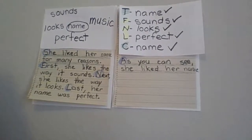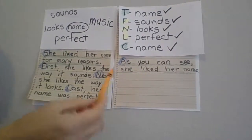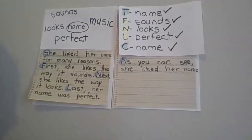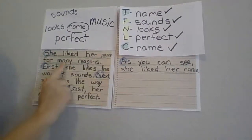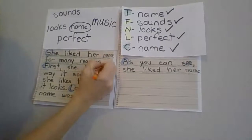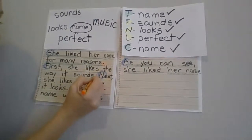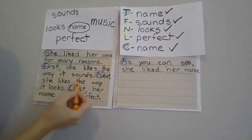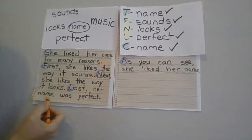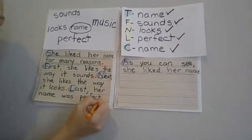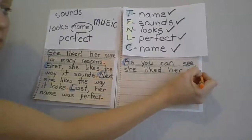Now you'll need your orange. With your orange, we're going to look for our periods at the ends of the sentences — not at the ends of the lines, at the end of our sentence. Put your finger on the first word. She liked her name for many reasons — period. First, she likes the way it sounds — period. Next, she likes the way it looks — period. Last, her name was perfect — period. As you can see, she liked her name — period.